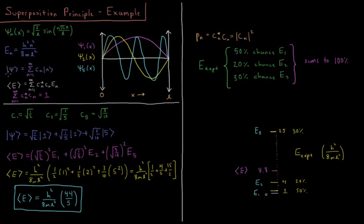We're going to represent our wave function as a linear combination of these three states. The coefficients for ψ₃ and ψ₄ are zero, and coefficients for ψ₆ up to ψ∞ are also zero. But we can still write it as a sum from n=1 to infinity of cₙ times ψₙ, represented by this ket vector in Dirac notation. The expectation value of energy is the sum from n=1 to infinity of cₙ* cₙ times the energy of that eigenfunction, and the normalization condition requires that sum to equal 1.